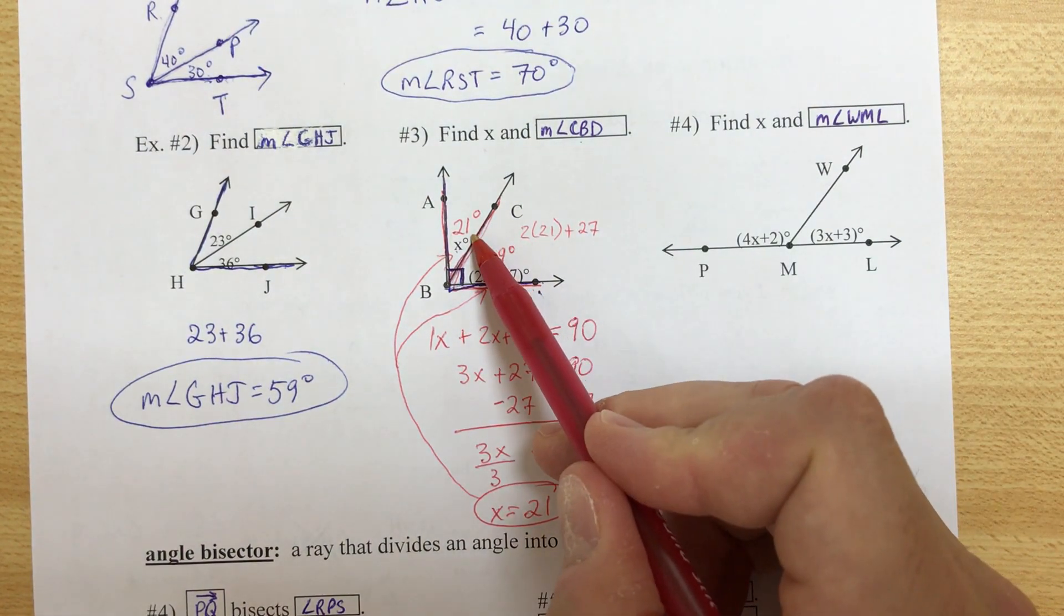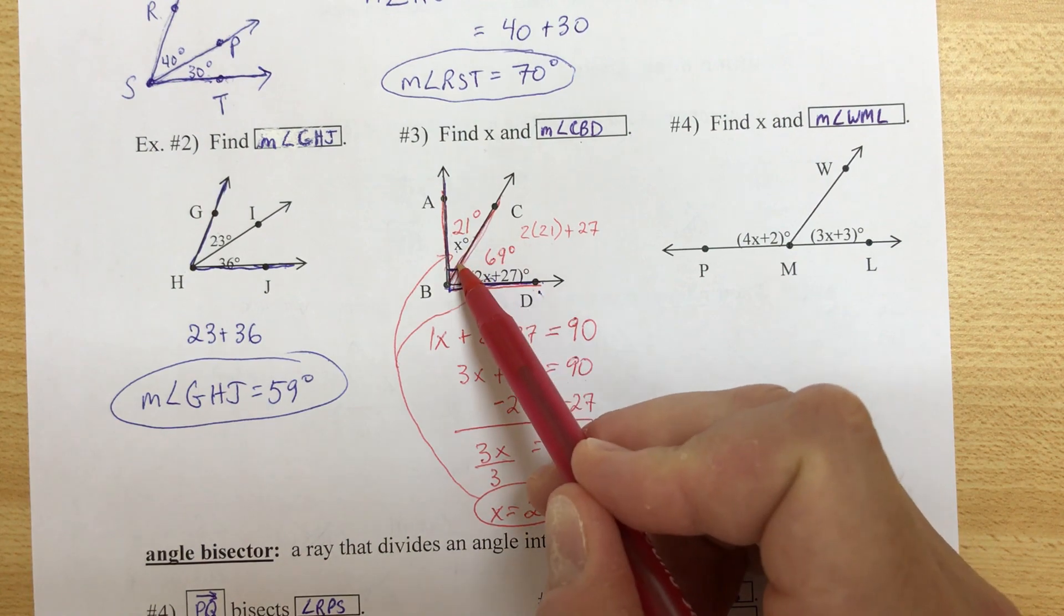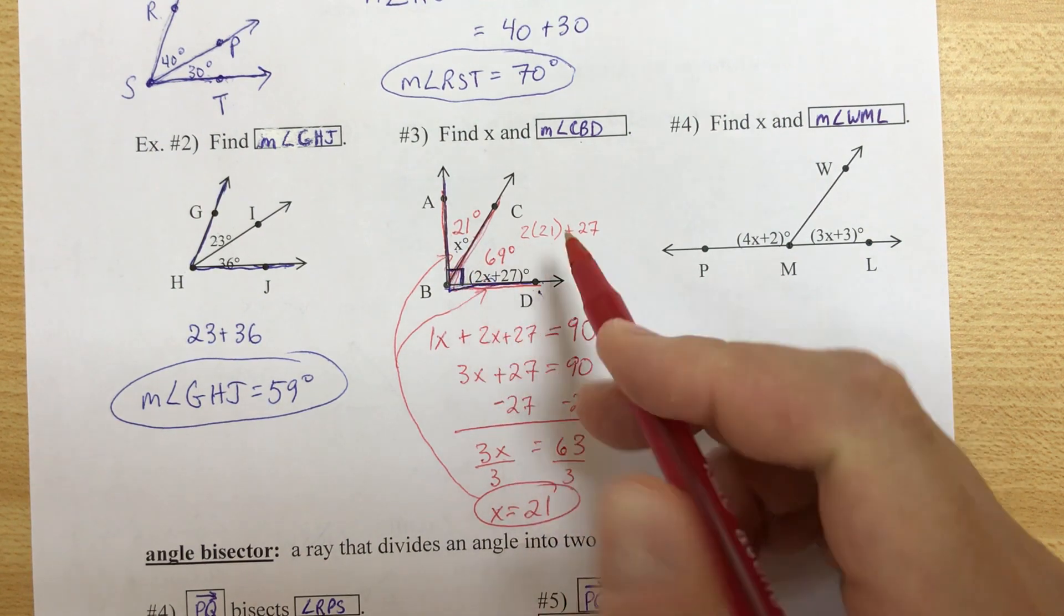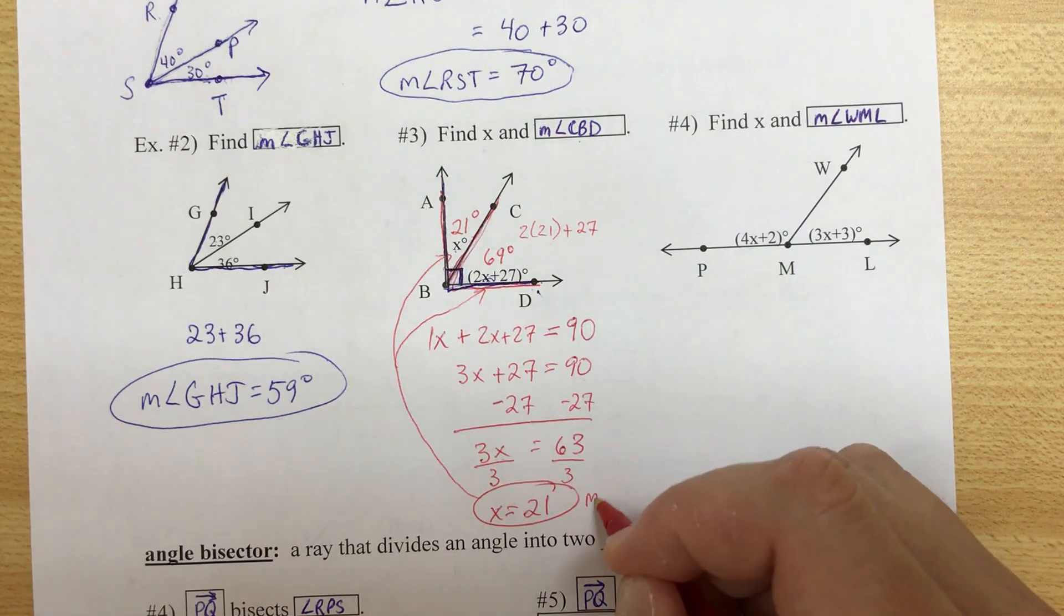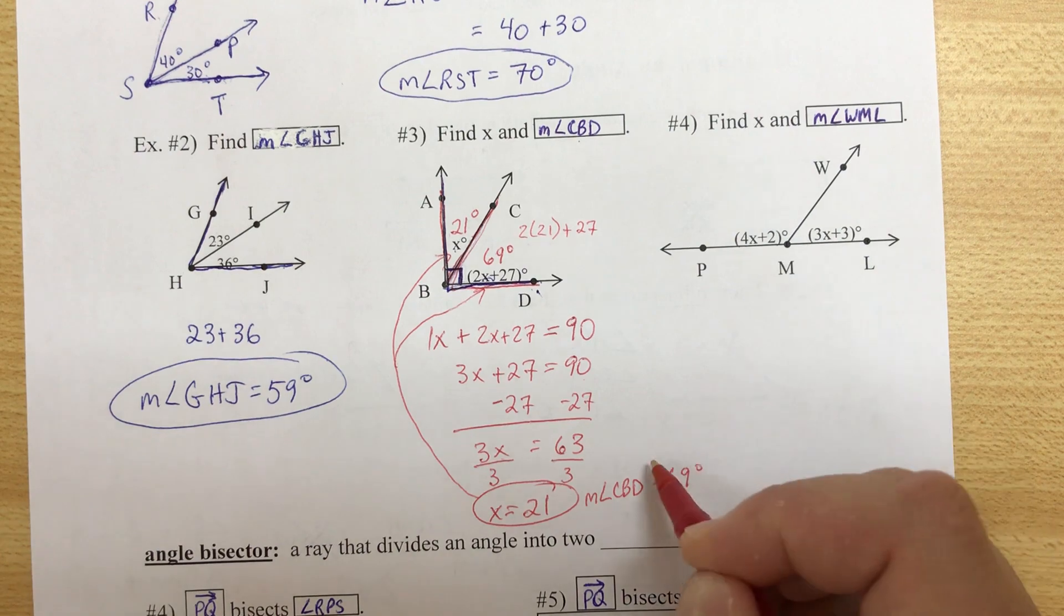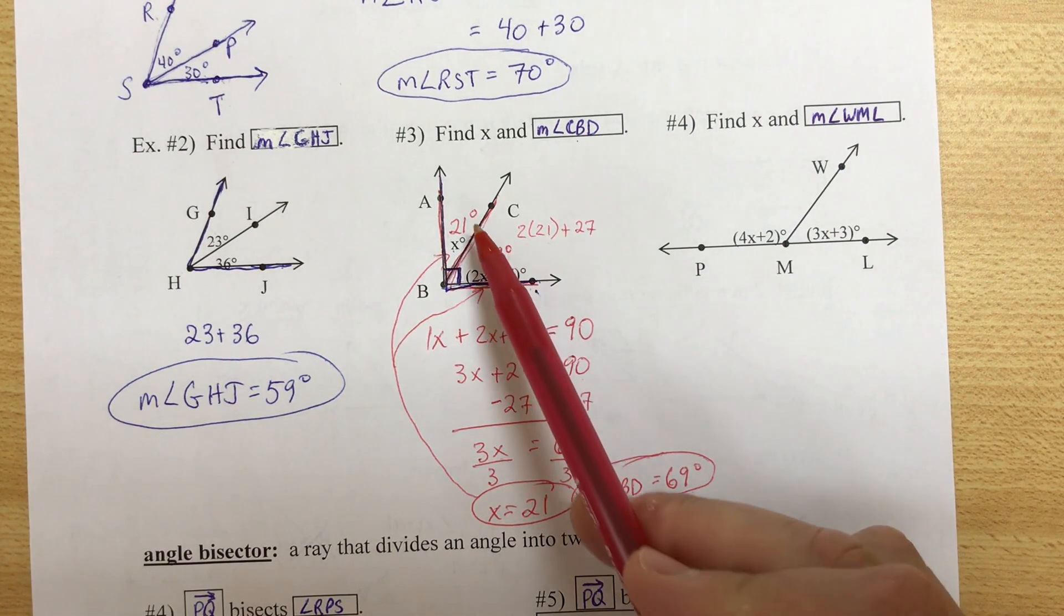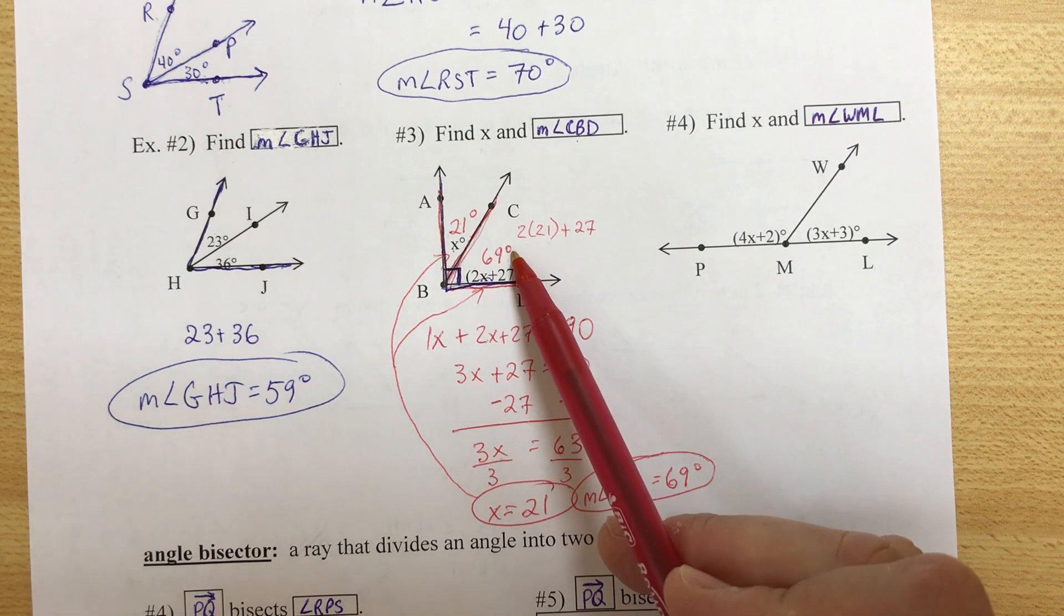The reason why I also substitute here, now we can check. If you add that up, do we get 90? Yes. So the measure of angle CBD, that's the other answer, is 69 degrees. So even though I only wanted that one, I did both because then I check, I know that I'm right.